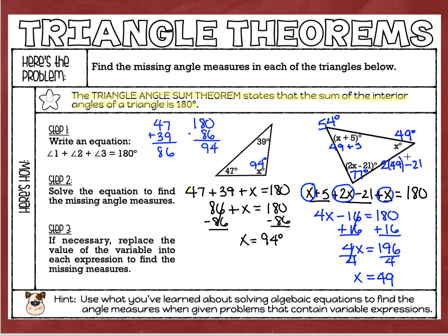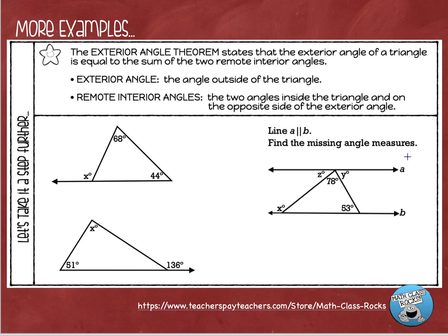Let's look at the bottom of the worksheet now. This is all about the exterior angle theorem — a whole different theorem, but not difficult. The exterior angle theorem states that the exterior angle of a triangle is equal to the sum of the two remote interior angles. An exterior angle — think about the exterior of your house, that means outside — so the exterior angle is the angle that is outside the triangle. The remote interior angles are the two angles across from that exterior angle, inside the triangle on the opposite side.